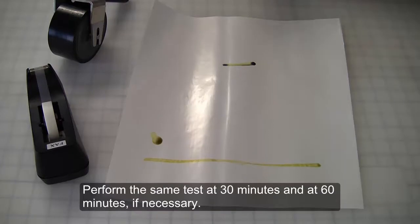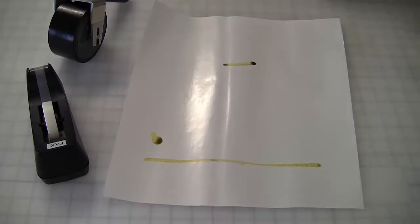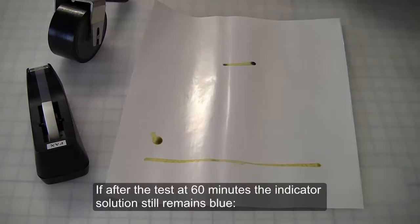Perform the same test at 30 minutes and at 60 minutes if necessary. If at any point the indicator solution does not remain blue in an area, the primer has fully cured. If after the test at 60 minutes the indicator solution still remains blue, refer back to the checklist.